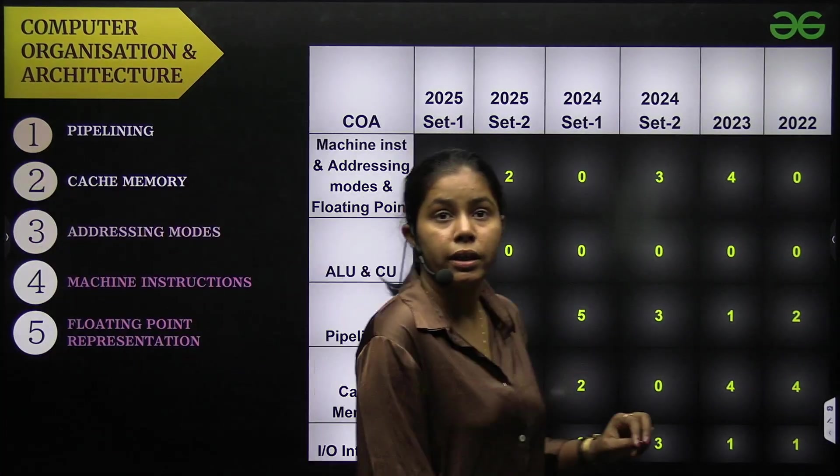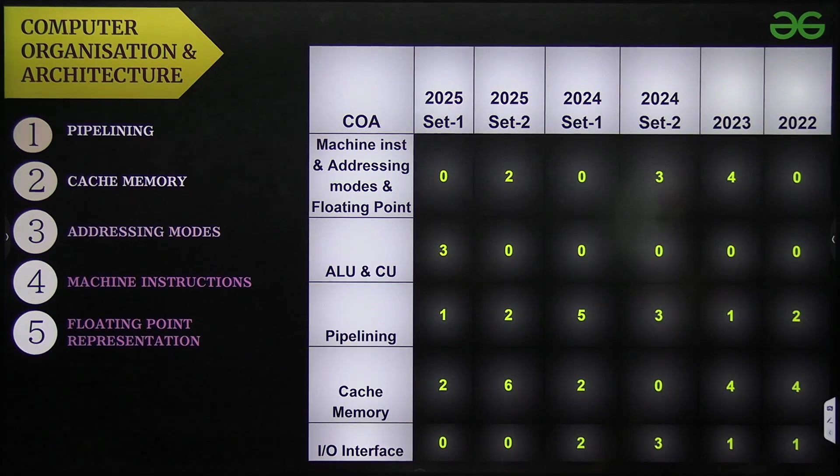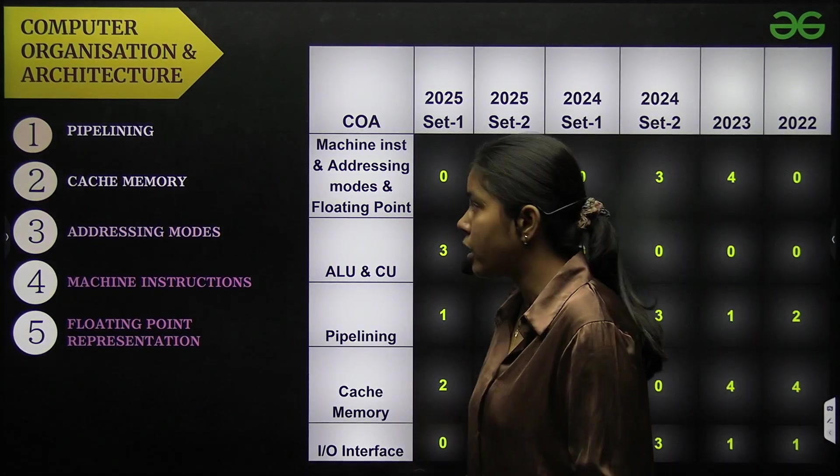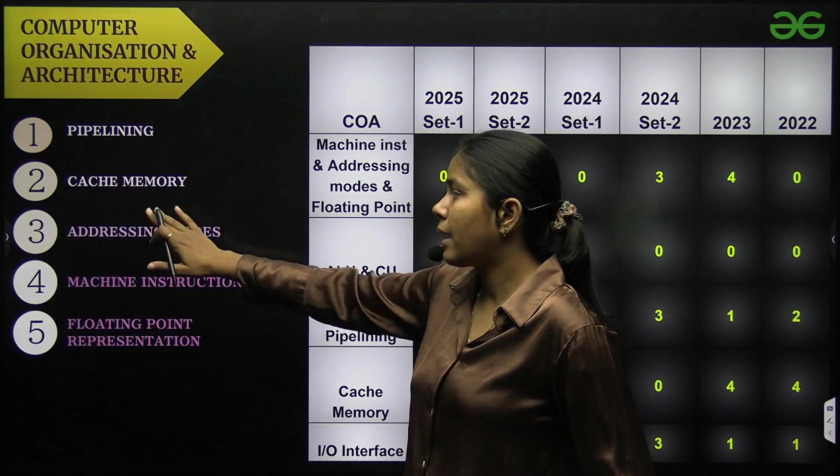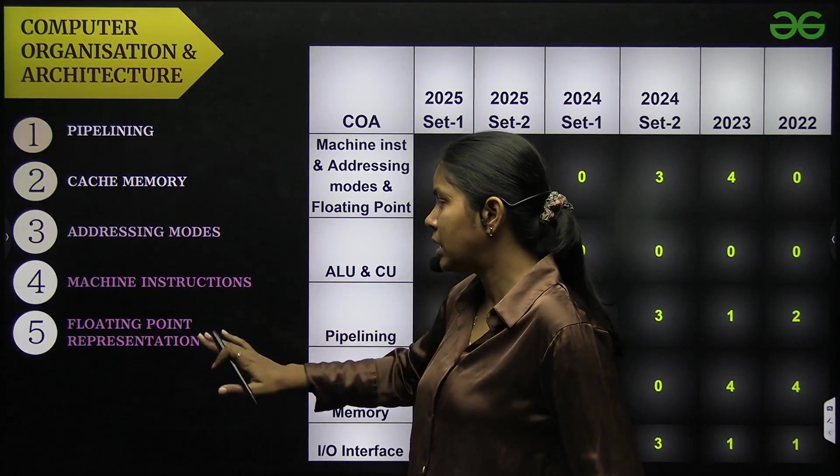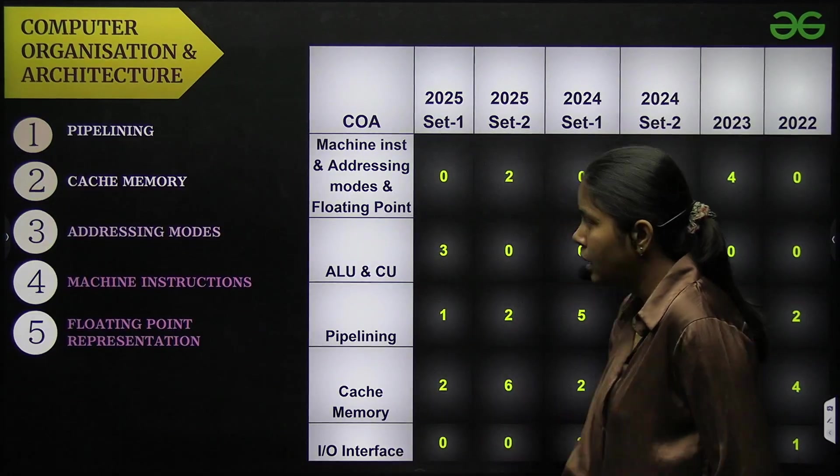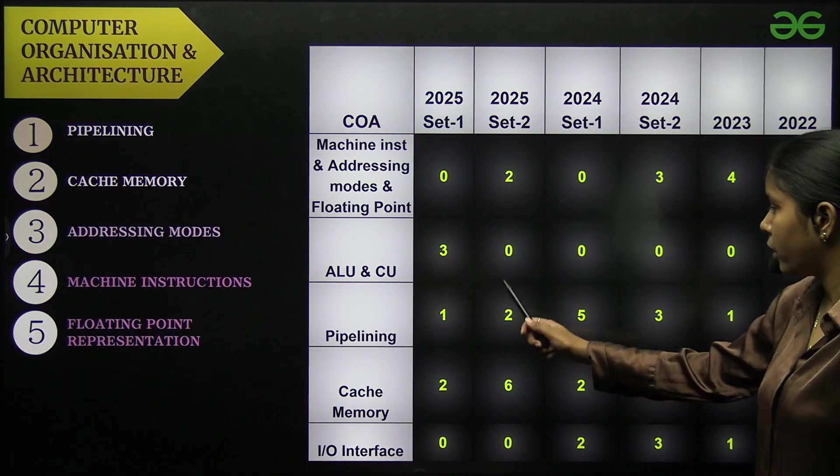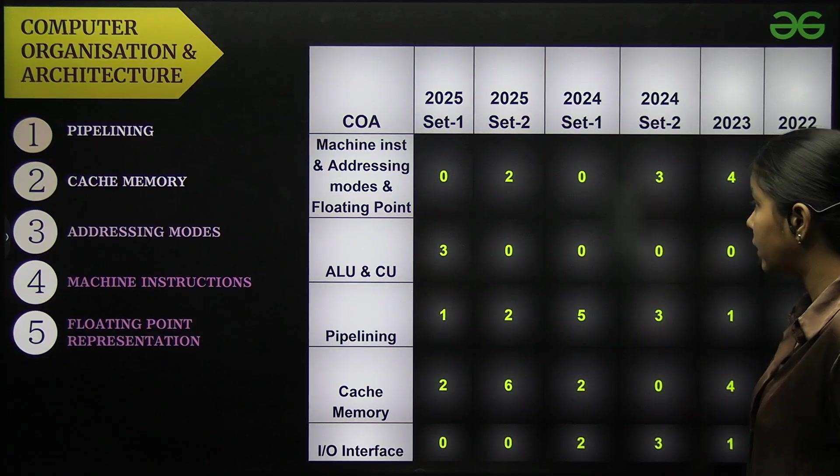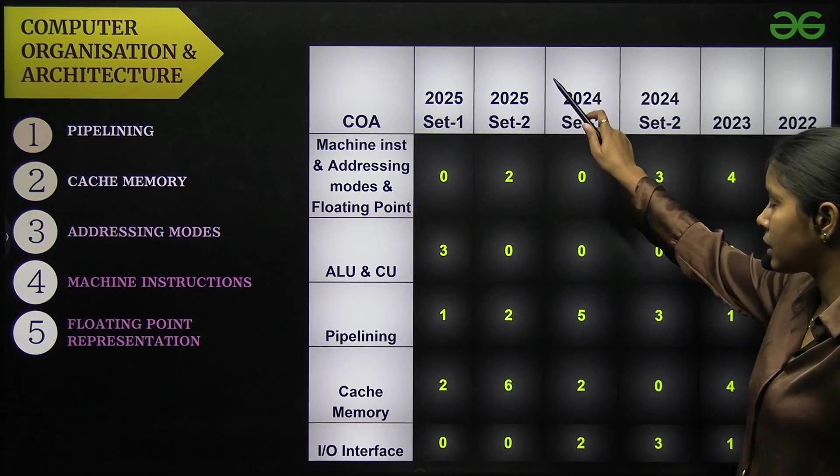Then we have computer organization and architecture, COA which many students find difficult. But the important topics here are: pipelining, cache memory, addressing modes, machine instruction, floating point representation. These topics are important and you can see the important topics weightage is also given, like cache memory in set two there are six marks questions.